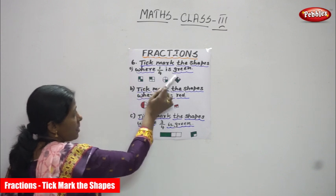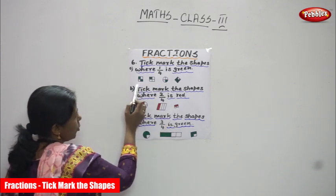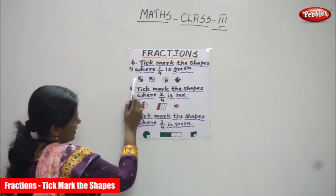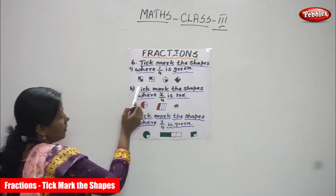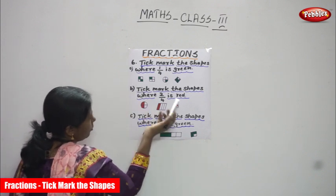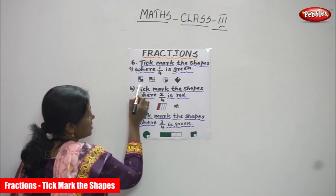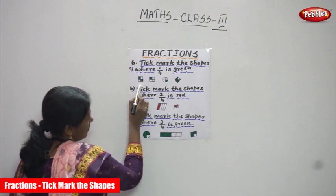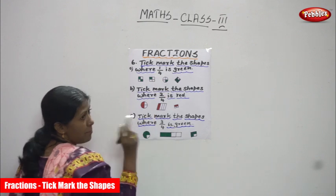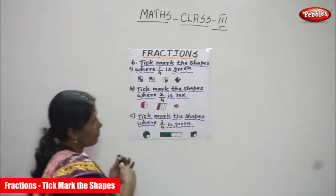See, the question asks where one by four is green. Look at the first diagram — this square is separated into four parts. But I shaded two parts in this first diagram, so you should not consider this because we need only one by four. One by four means one quarter.